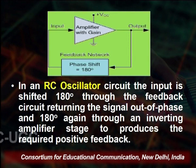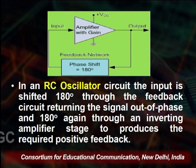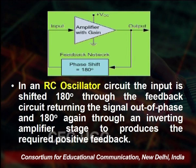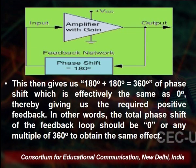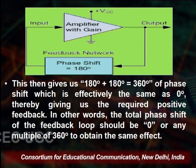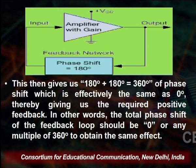Positive feedback is important in this RC oscillator. In an RC oscillator circuit, the input is shifted 180 degrees through the feedback circuit, returning the signal out of phase, and then shifted 180 degrees again through an inverting amplifier stage to produce the required positive feedback. This gives us 180 plus 180 equals 360 degrees of phase shift, which is effectively the same as 0 degrees, thereby giving us the required positive feedback. The total phase shift of the feedback loop should be 0 or any multiple of 360 degrees.